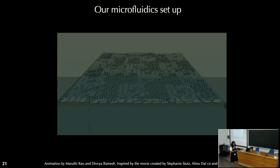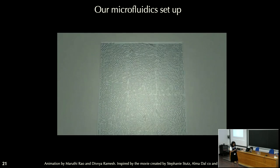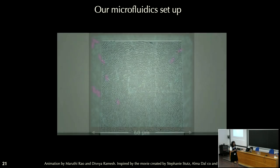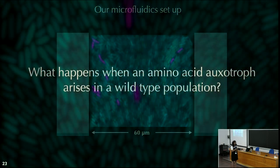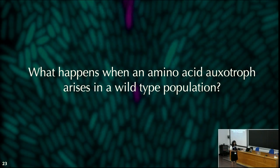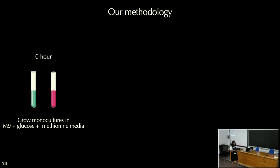Depending on the size of the chamber, this is an example picture from one of my experiments where the chamber width is roughly 60 microns. To study what happens when an amino acid auxotroph arises in a wild type population, I basically start with two monocultures where I grow them in M9 supplemented with carbon — in this case glucose — with methionine, which is the amino acid that the auxotroph cannot produce.